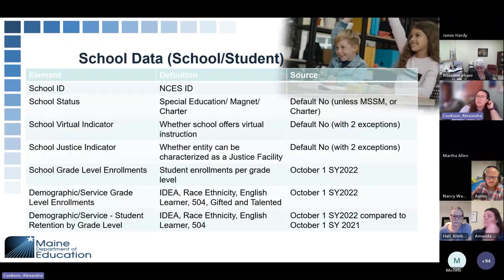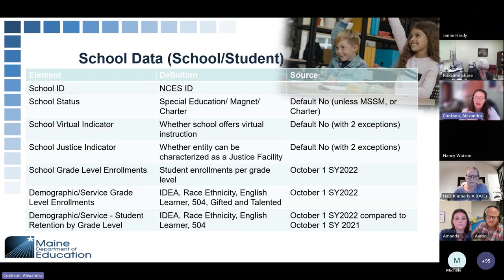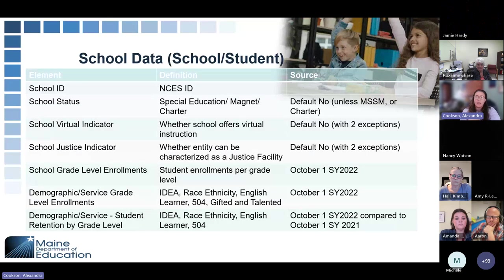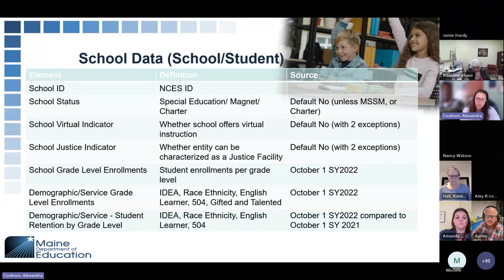We also have school level data. This is more paraphrased because there are so many elements — it's overwhelming to look at the full spreadsheet of 1,045 elements. At the school level, for school and student information, we'll upload your school ID, school status, whether you're a special education school, magnet school, or charter school. We default everyone to no unless you are Maine School of Science and Math or a charter school. We also have a virtual indicator for our two virtual schools and a justice indicator for our justice schools. Student enrollments per grade level will come from the SY 2022 October 1 report, reported in October 2021.